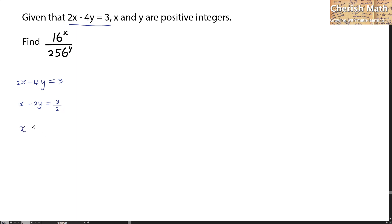3 over 2 is the same as 1.5. So the value of x, I can equate it as 2y plus 1.5, because I'm bringing negative 2y to the right hand side.